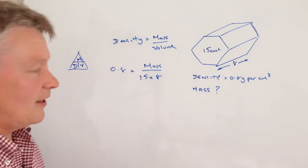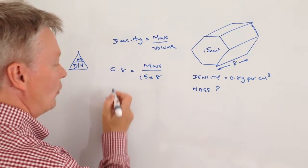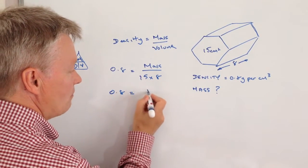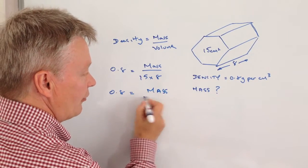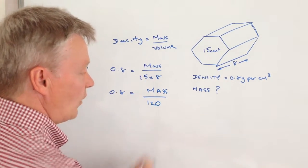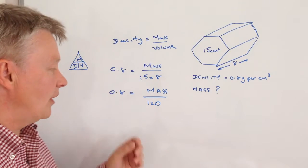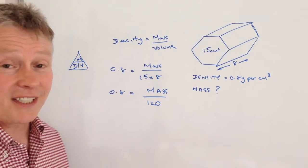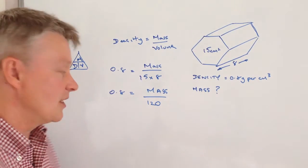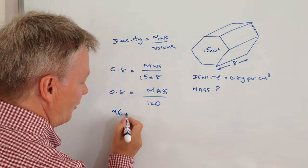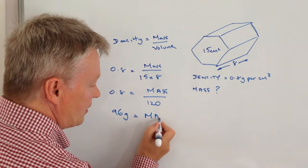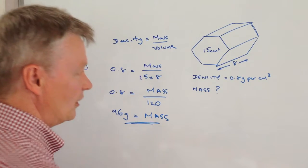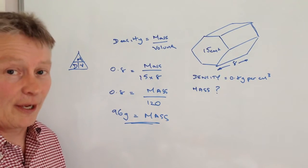So if we work that out, then we've got 0.8 equals mass, which is the information we're looking for, divided by 120. And if I cross multiply that, I get 120 times 0.8, which is 96. So in other words, the mass of this particular unit is actually 96 grams.